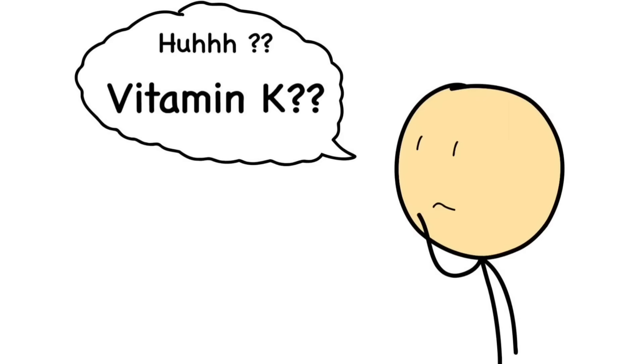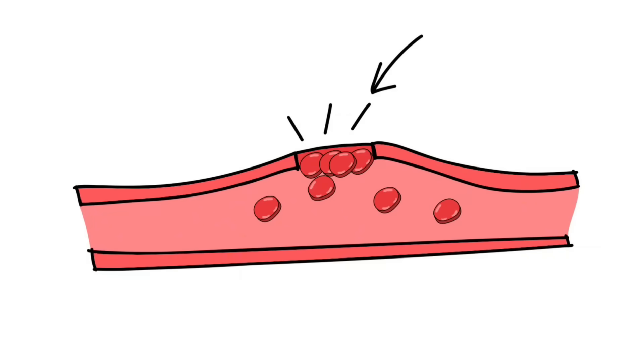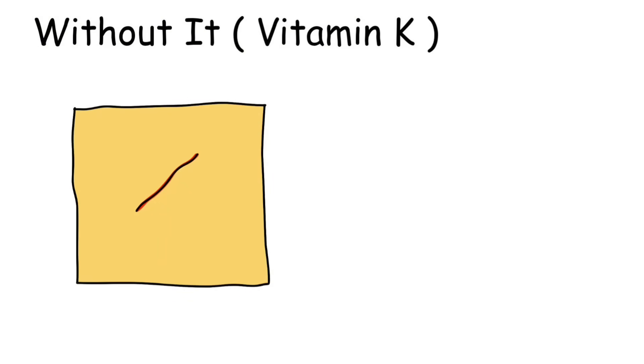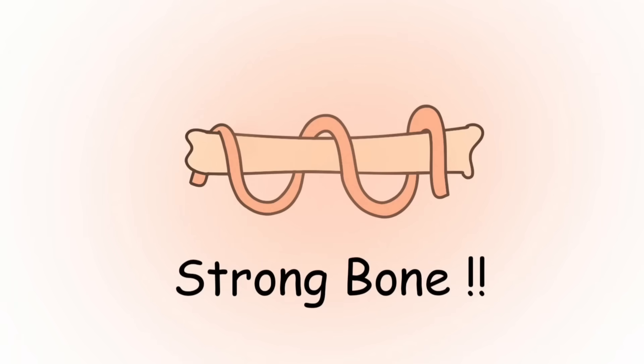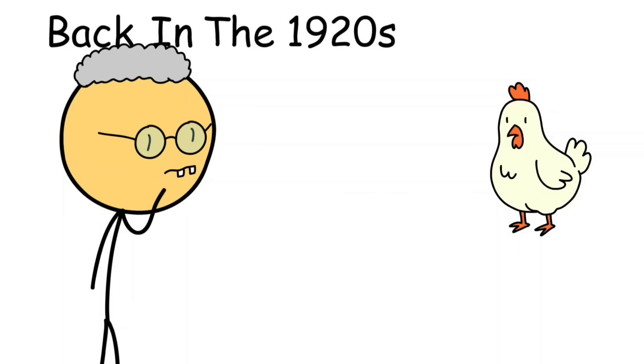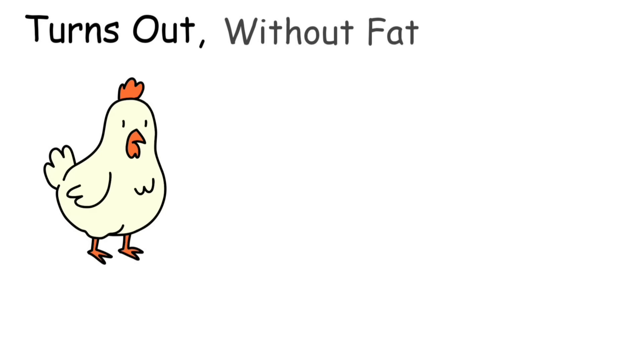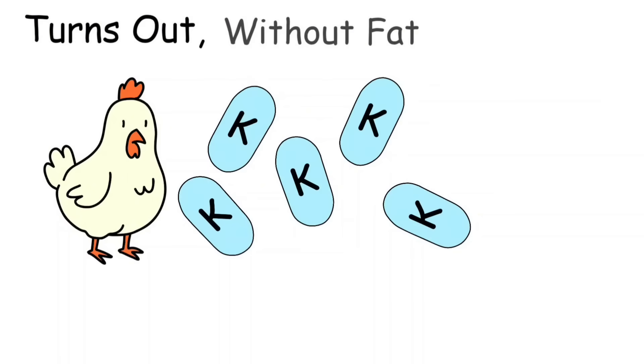Vitamin K is the vitamin you don't hear much about until you start bleeding. Its main job is blood clotting. Without it, even a tiny paper cut could, in theory, turn into a much bigger problem. It helps your body activate proteins that stop bleeding, and also plays a role in bone health. The K actually comes from the German word coagulation. Back in the 1920s, scientists noticed chickens fed a fat-free diet started bleeding internally. Turns out, without fat, the birds couldn't absorb vitamin K and their bodies couldn't clot blood properly.